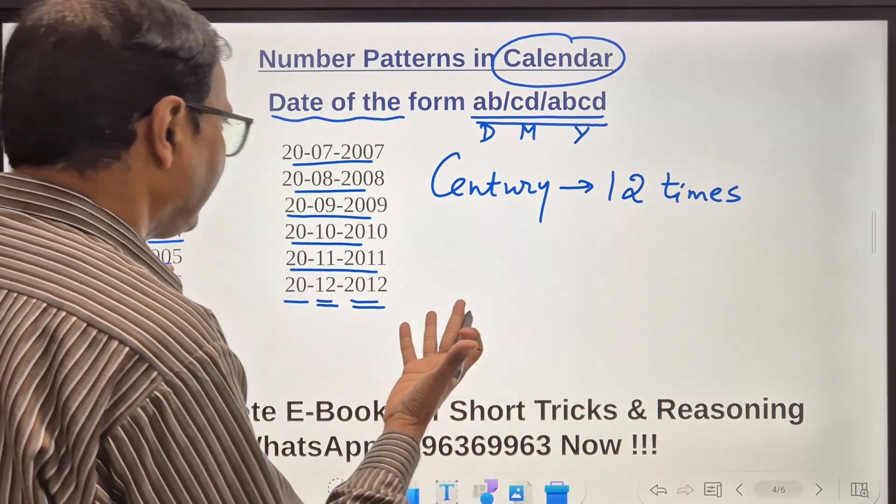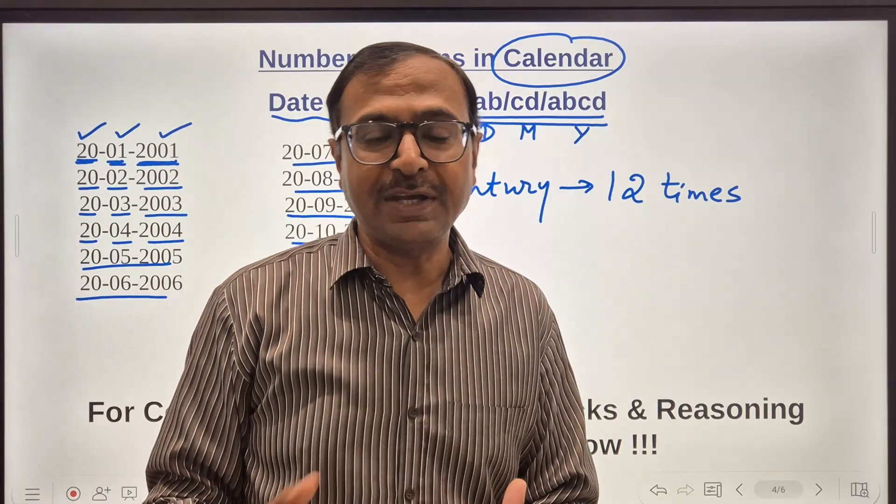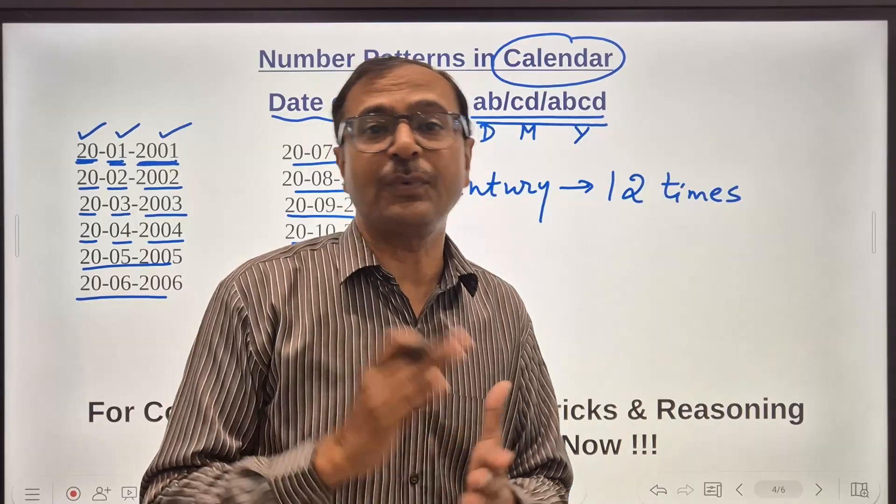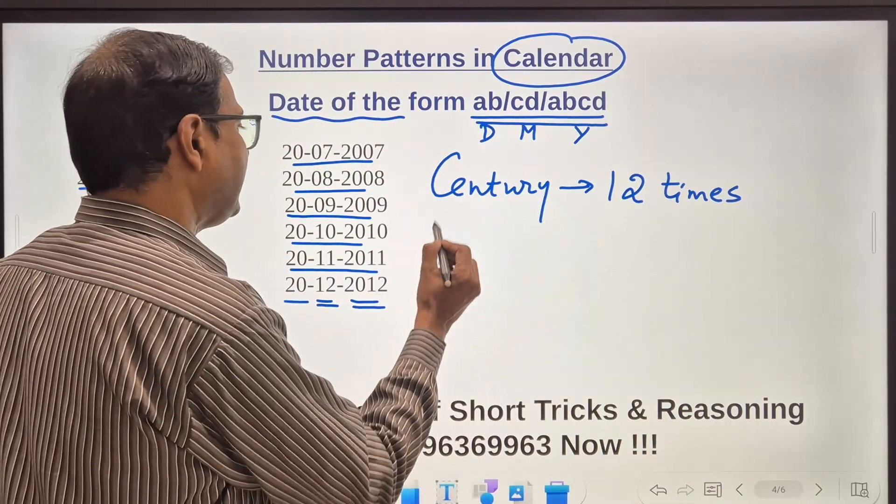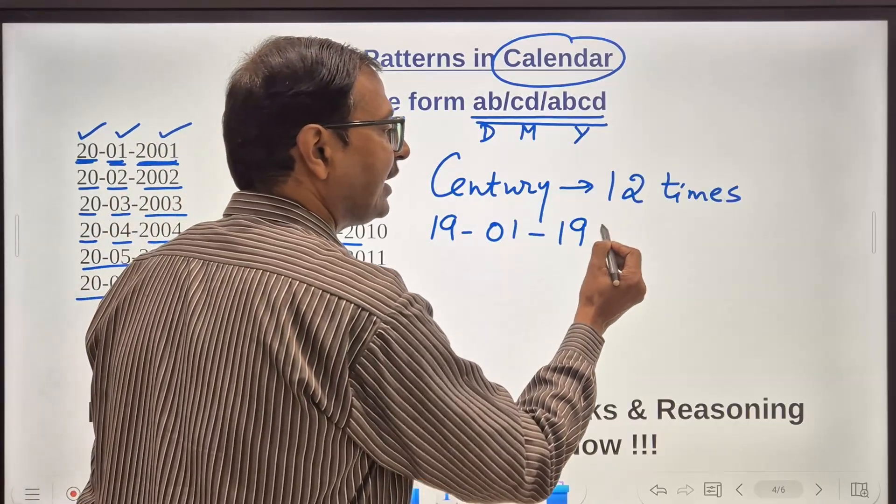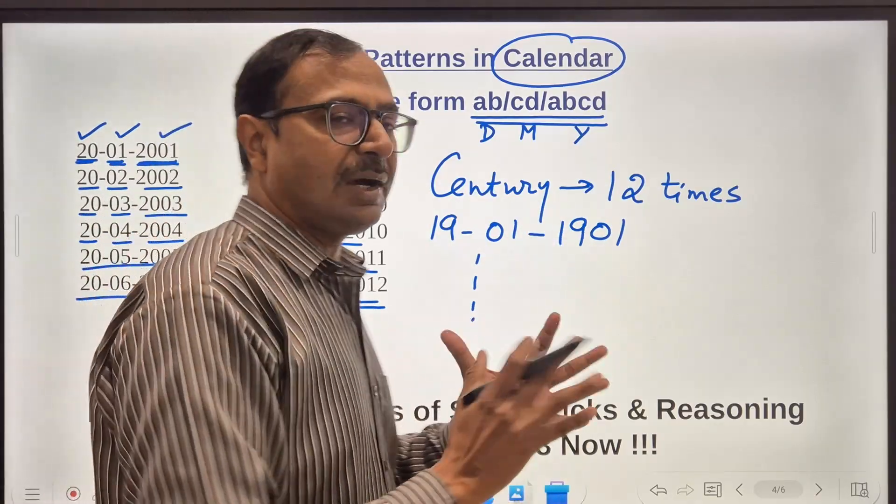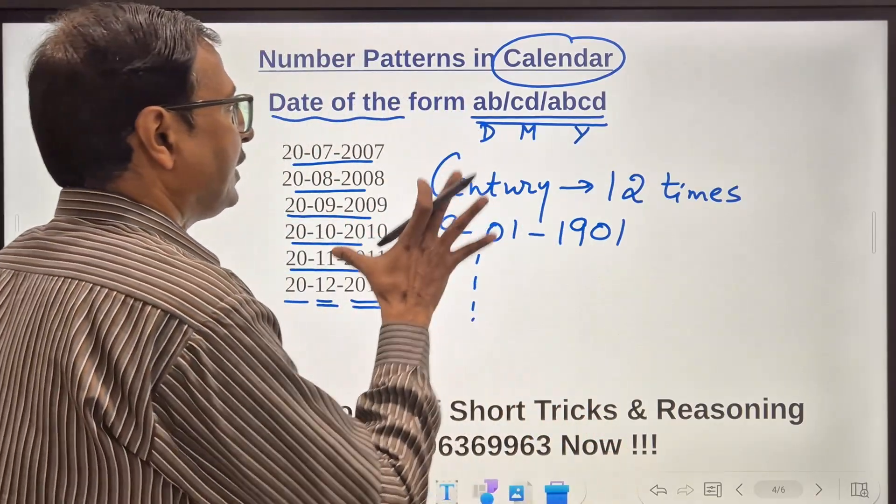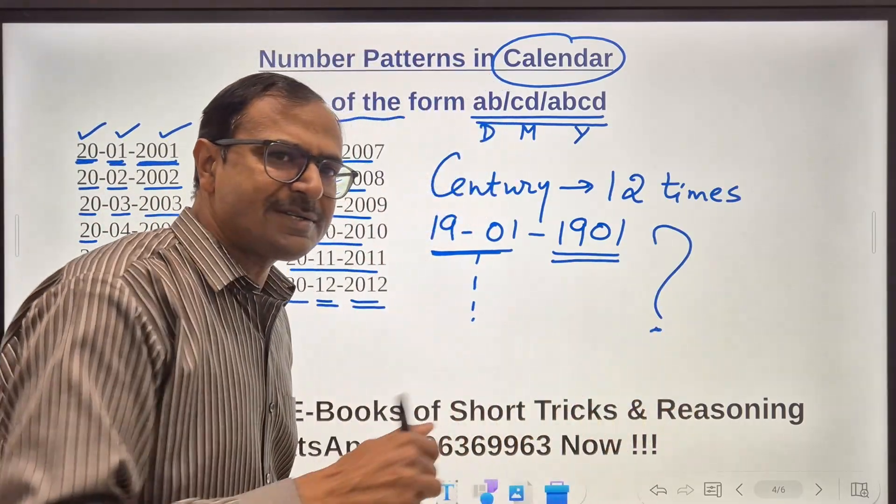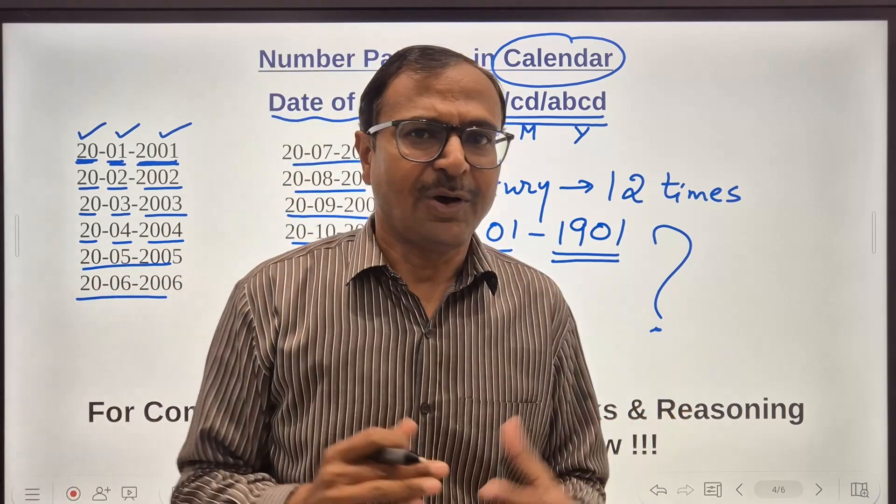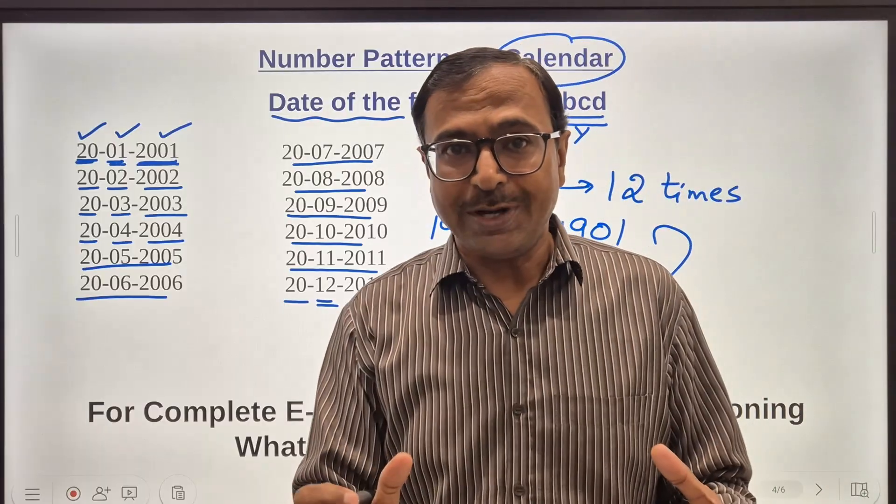Now can you guess some more dates like this which happened before the beginning of the year 2000? Like in the years which start with 19? So can we do 19-01-1901 year? Can you list all these dates in which you got a particular date in the form AB/CD/ABCD? Just let me know in the comments, did you get some more dates or are there only 12 dates in a particular century like this?